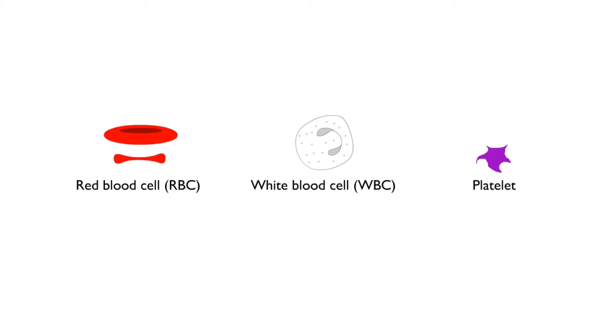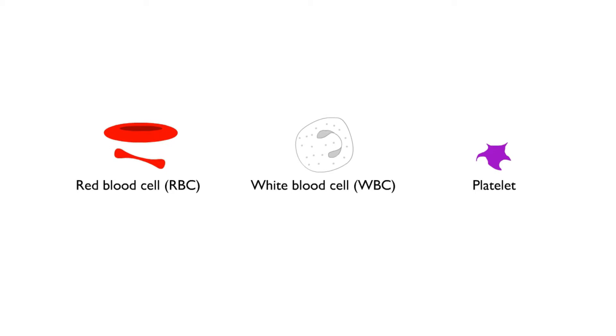The human body has three types of cells in the blood — namely RBC, WBC, and platelets. On the surface of the RBC, we find two types of agglutinogens. They are called agglutinogen A and agglutinogen B.